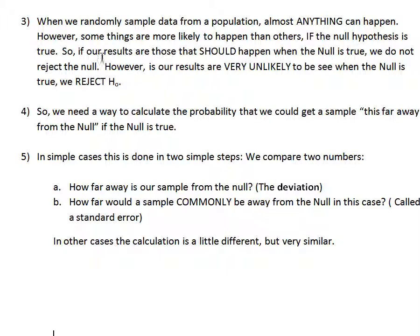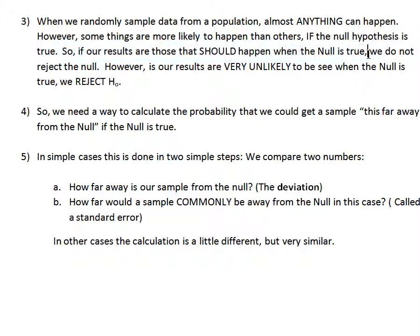We assume the null hypothesis is true and say: if it's true, this result is likely to happen. If we collect IQs and find the sample average is close to 100, what do we do? Reject the idea that the average is 100, or not reject it? If the sample average is pretty close to 100, that's consistent with the null, so we do not reject it. If the results are those we predicted as likely, we do not reject the null.